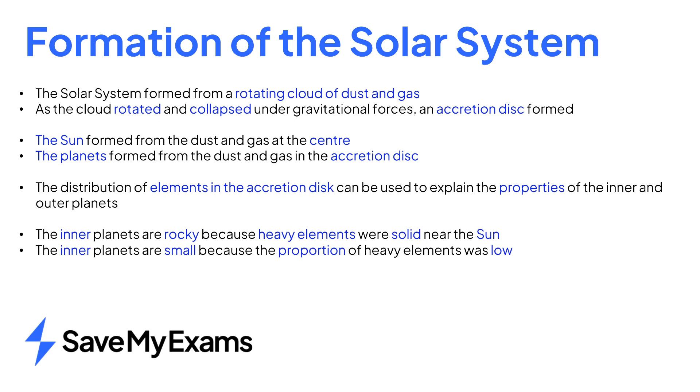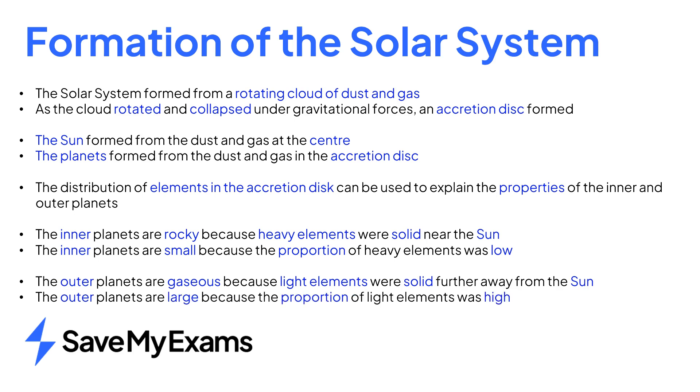The inner planets are small because heavy elements are produced in supernovae in small amounts. The outer planets are gaseous because light elements were able to exist as solids further away from the sun. The outer planets are large because the proportion of light elements was much higher than heavy elements.